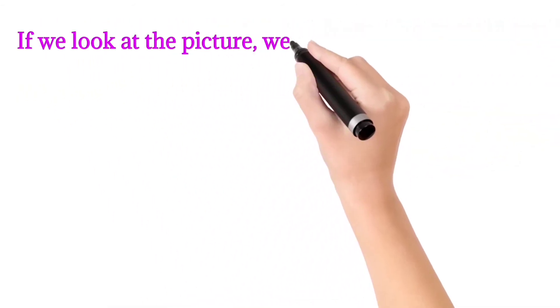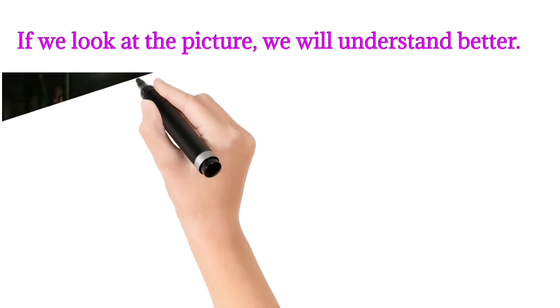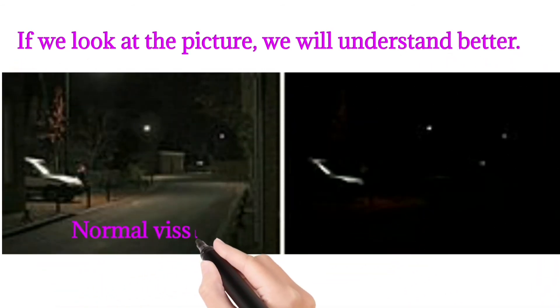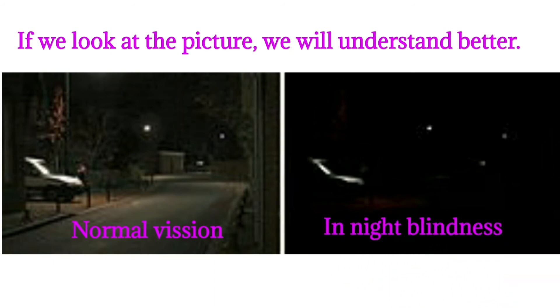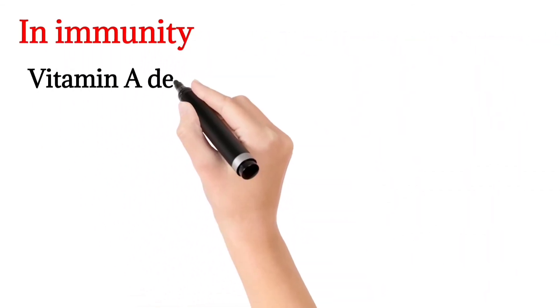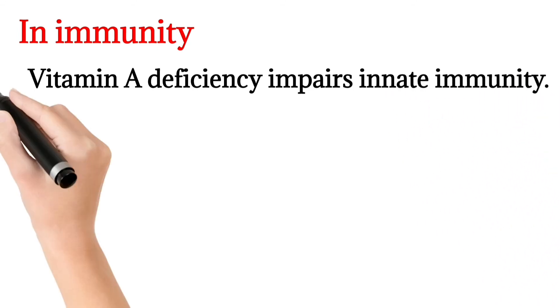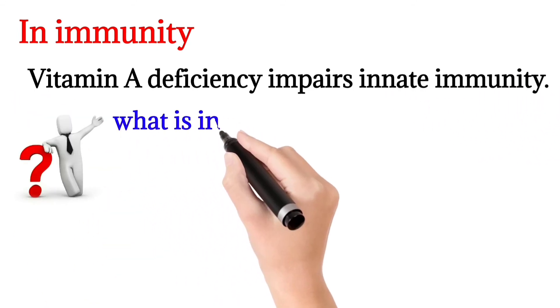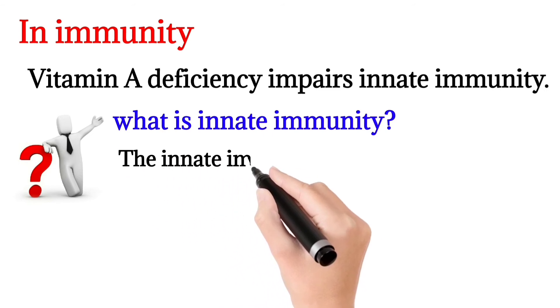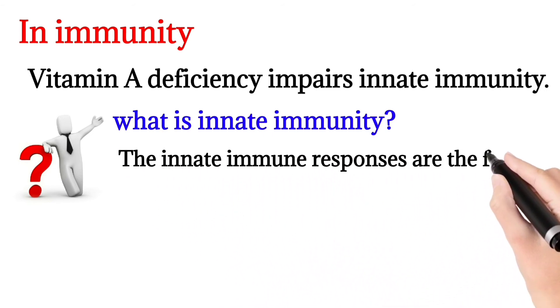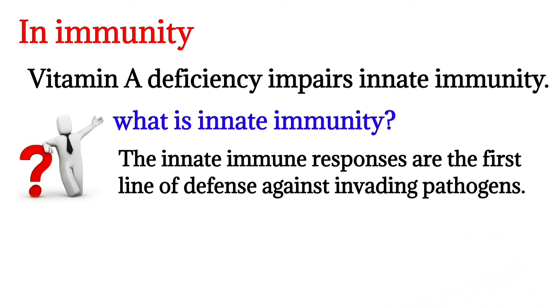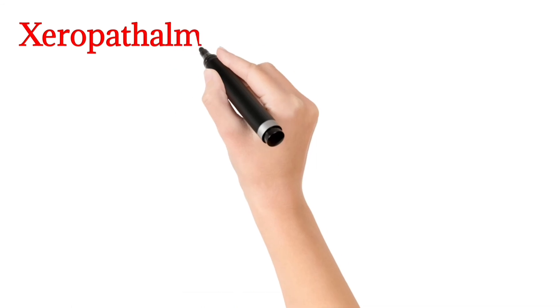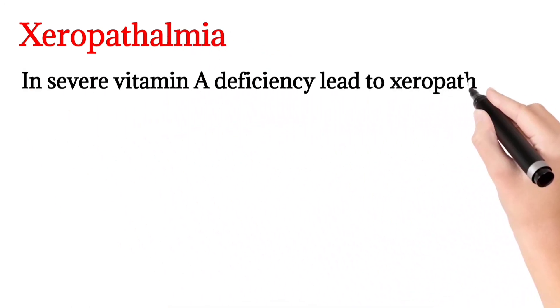In the picture, we can see the contrast between normal vision and night blindness. Regarding immunity, Vitamin A deficiency impairs innate immunity. Innate immune responses are the first line of defense against invading pathogens.